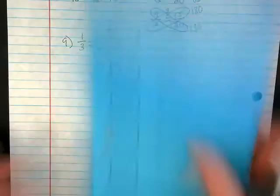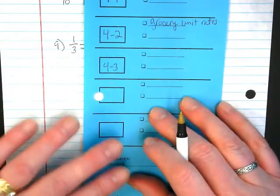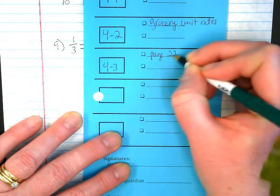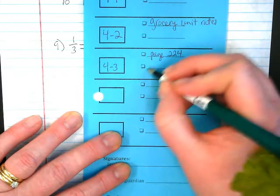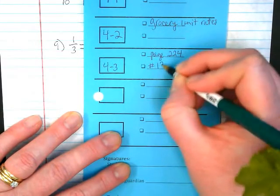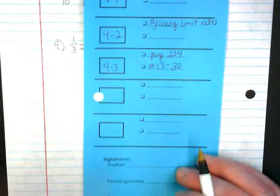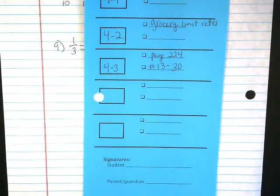So on your contract I want you to write for 4-3 on page 224. You're doing numbers 13 through 30. And hopefully most of you will finish in class and when you do I want you to go to ST Math. Okay?